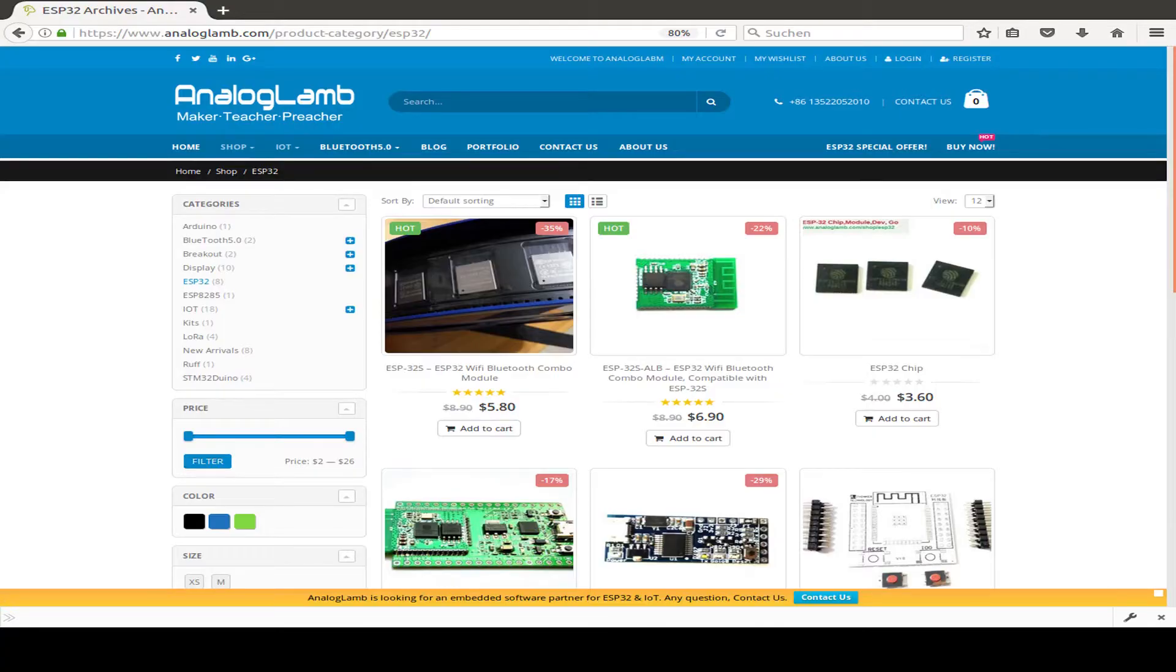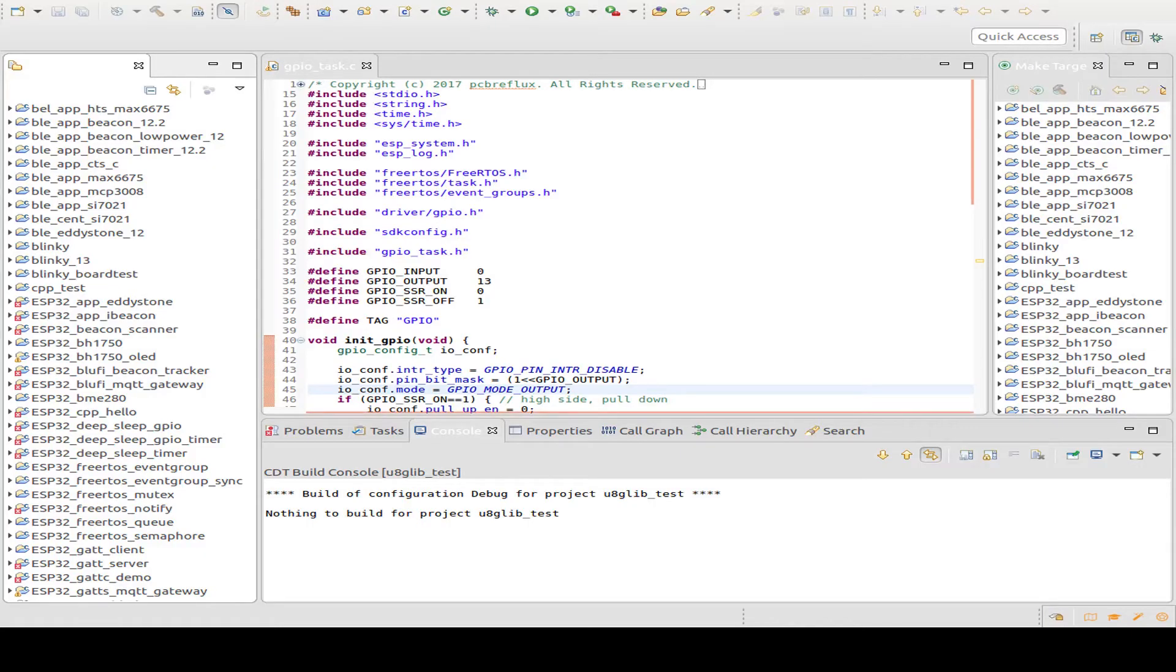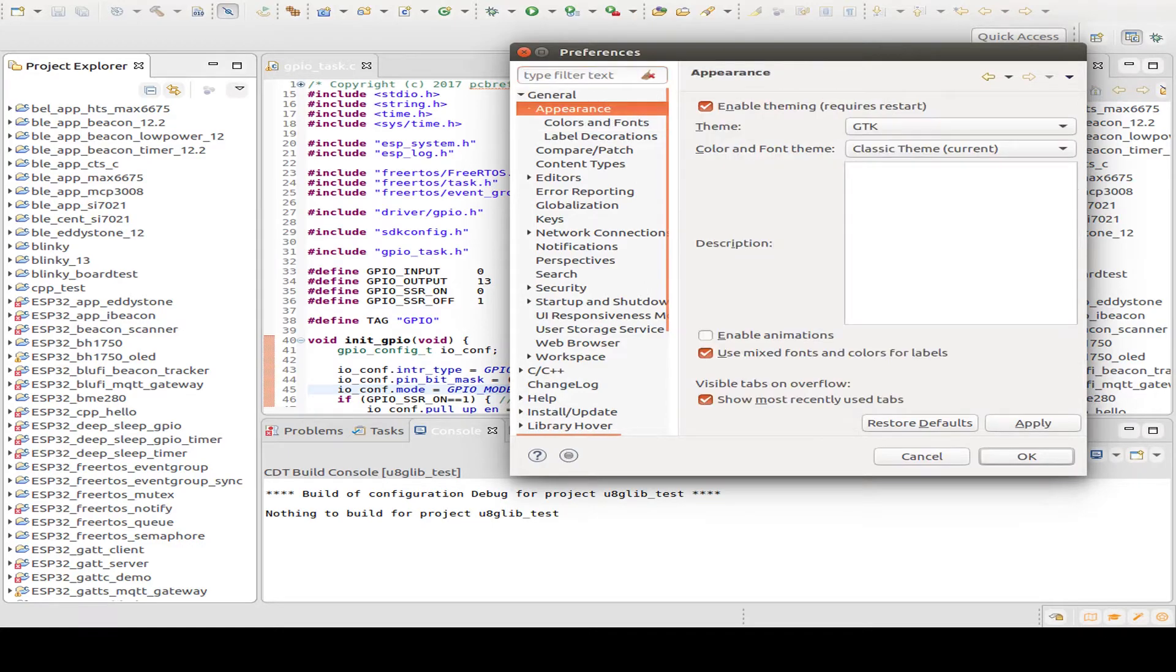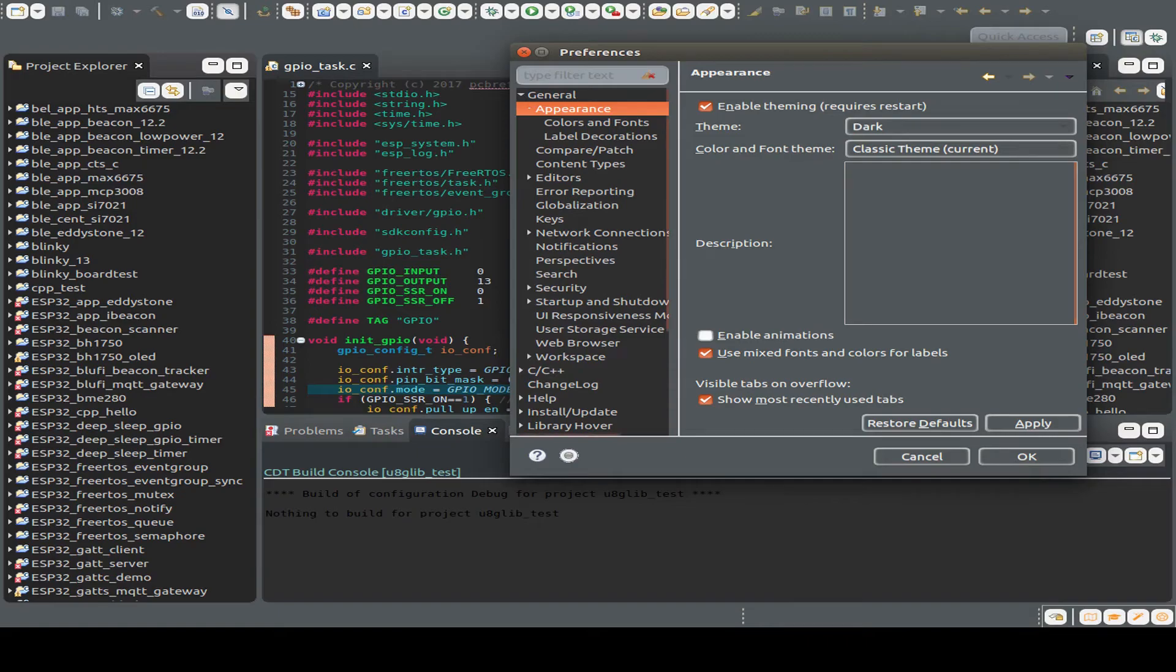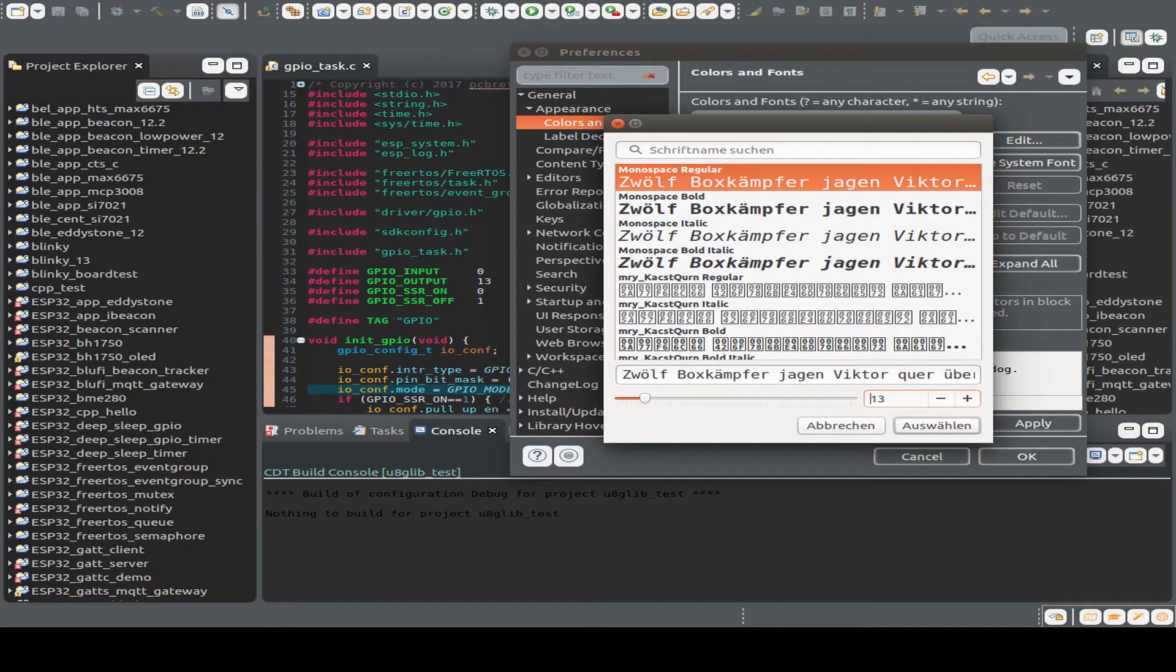And again, analog lamp sponsors two giveaways. So just check the description. And now before I show you the code, I switch my preference settings for my editor. I switch to the dark theme and change the font size. So on mobile devices, we can see our code a little bit better.